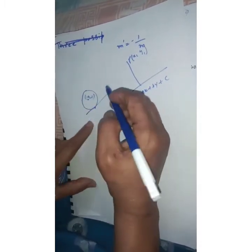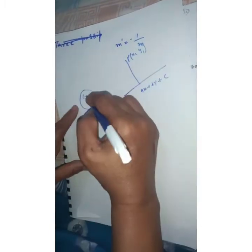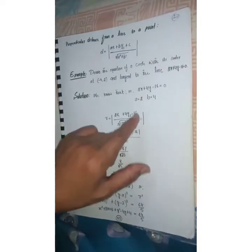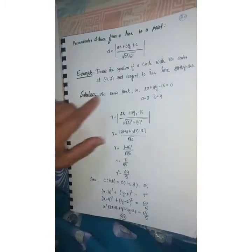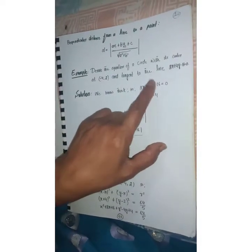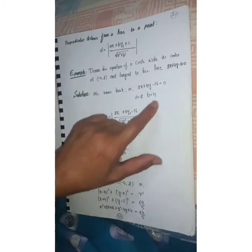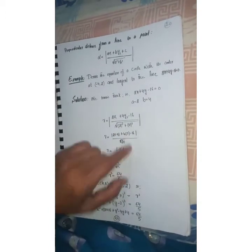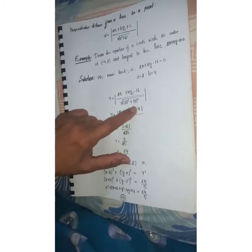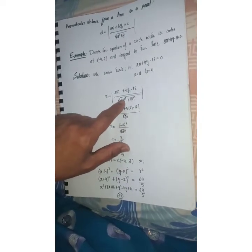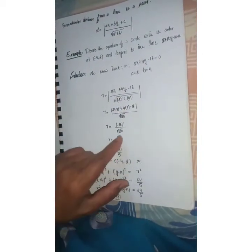Let the center be at (-4, 2). The line is tangent to this circle. The point common to the circle and the line is where the radius meets the tangent, so the distance from the center to the line is the radius. Using the perpendicular distance formula, with x1 = -4, y1 = 2, a = 2, b = 4, c = -16: radius = |2(-4) + 4(2) - 16| / √(2² + 4²) = |-8 + 8 - 16| / √20.